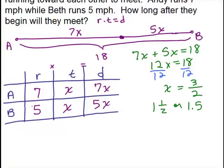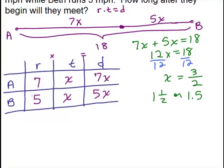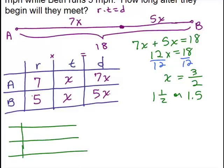Now let's check to make sure this all makes sense. So we're going to take this chart again, and now we're going to fill in x since we know it. So we've got Andy and Beth. The rate we already knew was 7 and 5, but now we know what the time is. It's 1.5 or 1 and 1 half. I'm just going to go ahead and put in 1.5.